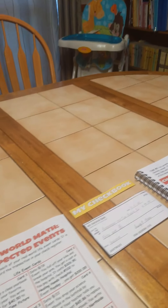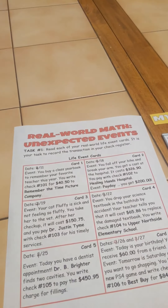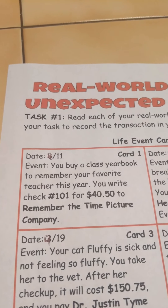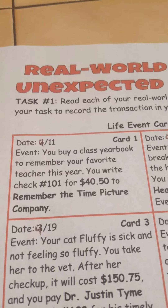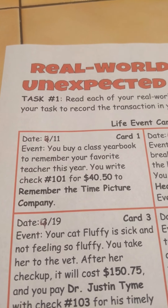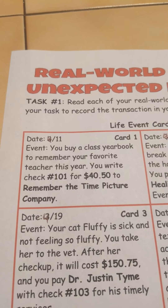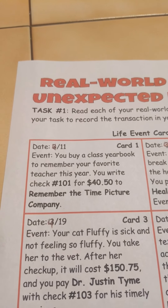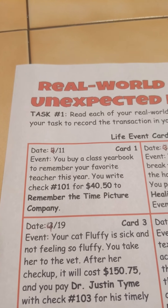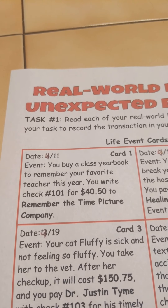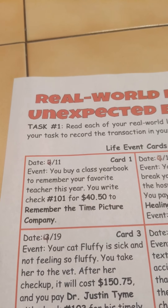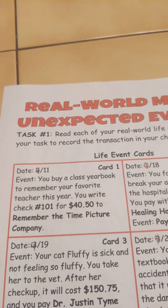Now, we're going to start reading our first event. Event number one: on April 11th, you buy a class yearbook to remember your favorite teacher this year. You write a check, number 101, for $40.50 to the Remember the Time Picture Company.